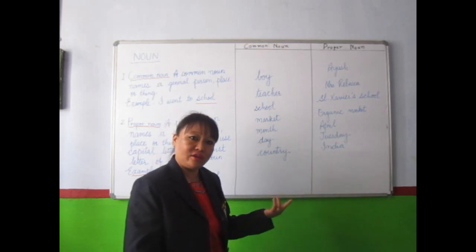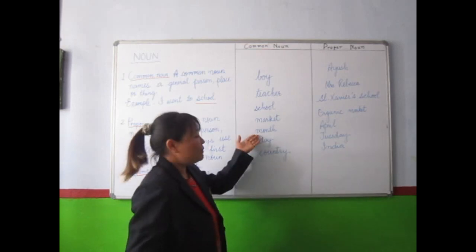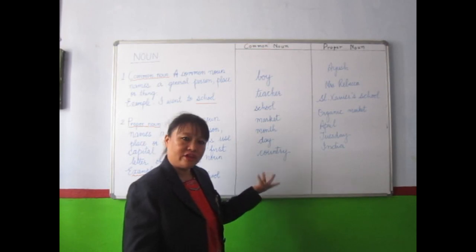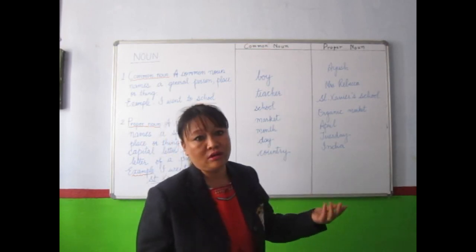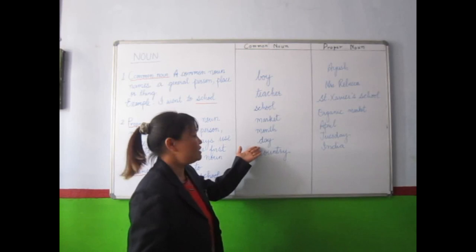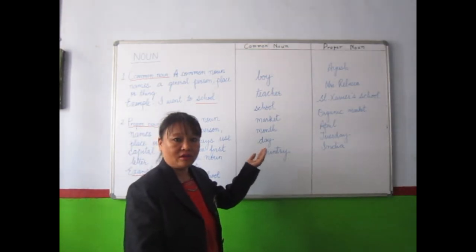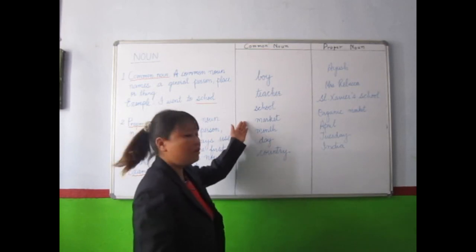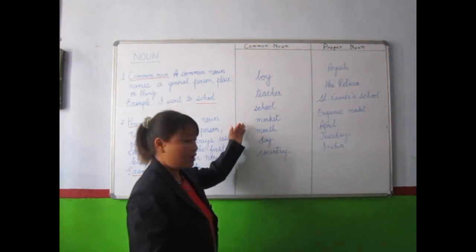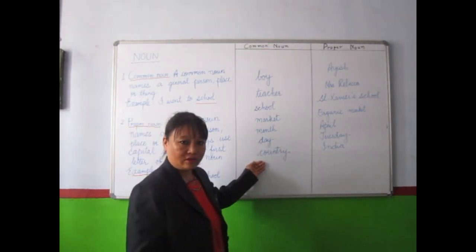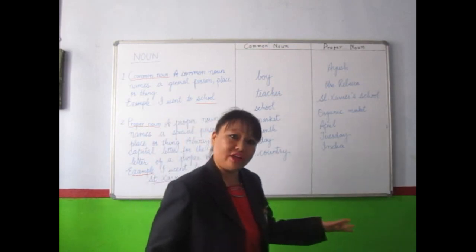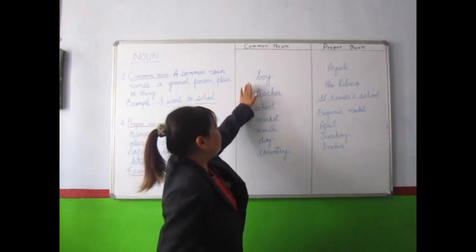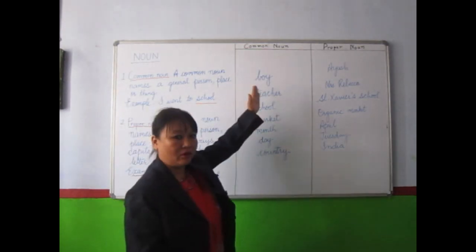Month — which month? January, February or March. And day — which day? Monday, Tuesday. So these are all common nouns. And when I say country, it can be Australia, it can be America. So these are all common nouns.